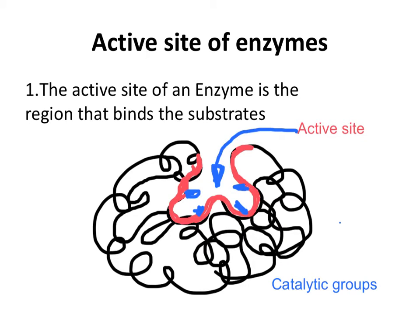The amino acid side chains lining up the active sites are called catalytic groups. Those amino acids can form hydrogen bonds, salt bridges, or hydrophobic interactions with the substrates.